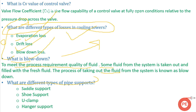The next question is: what are the different types of pipe supports? Pipe supports are an important part of a piping system — we cannot lay piping without supports. There are many types, but the four most prominently used across every industry are: saddle support, shoe support, U-clamp support, and hanger support. Most piping is mounted on these four types of supports.